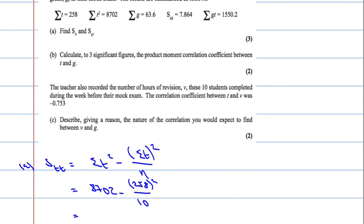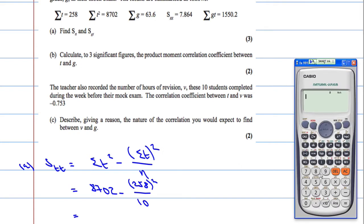And we're going to bash that into our calculator. So get your calculator out. Be very careful. 8702 minus a fraction, and open up some brackets just to protect it, 258 squared over 10. And then that's going to give us 2045.6.